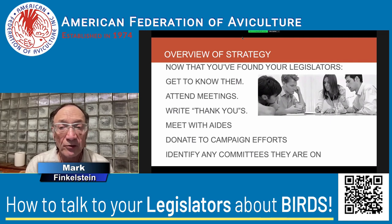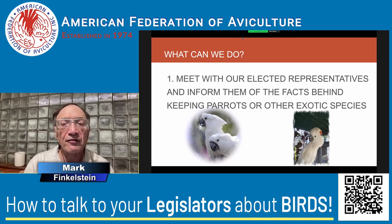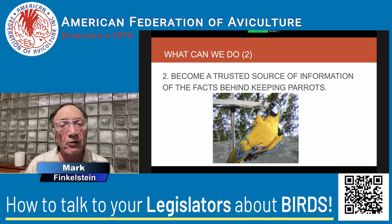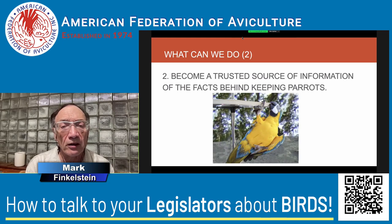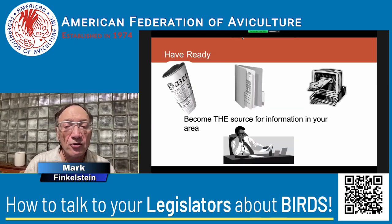Another important thing is to identify any committees they're on. If we're interested in animal rights issues, it's important to identify which elected representatives are involved with those committees — we want to meet with them and inform them of the facts behind keeping parrots. We want to become a trusted source of information. If a bill is presented and a congressman wants background information, he'll ask a legislative aide. If the only people they know to call are PETA or animal rights groups, we won't have a voice. But if we're known as trusted sources, we'll be another voice in the research process.